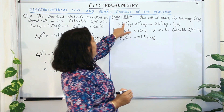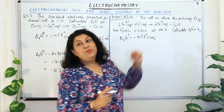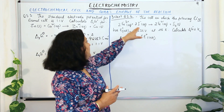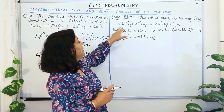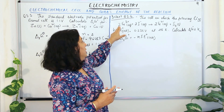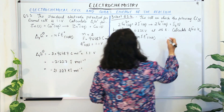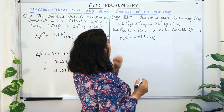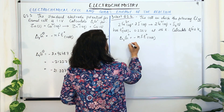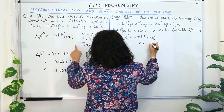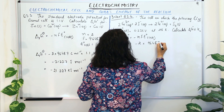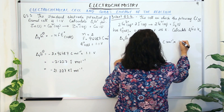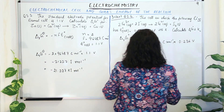Now, 2 Fe³⁺ ions are being converted into 2 Fe²⁺ ions. Although one electron is gained per ion, there are 2 of these ions, so N = 2. F is the same value of 96487 coulombs per mole, and E° cell is given as 0.236 volts. Let us substitute these values.